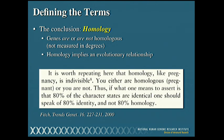If 80 percent of the character states — in this case the aligned residues — are identical, one should speak of 80 percent identity and not 80 percent homology. Similarity is the metric; homology is the conclusion.